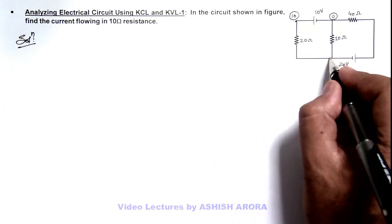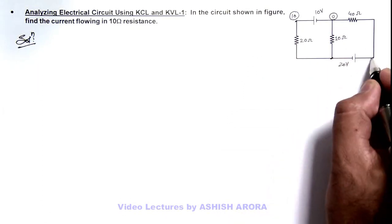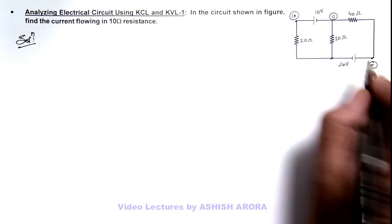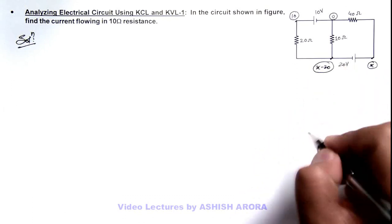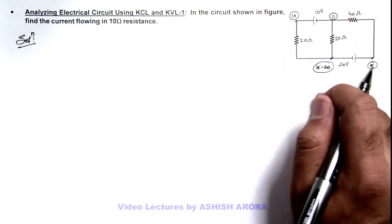So if we consider potential here to be x, here potential can be taken as x minus 20. Now at every point we have distributed the potential.